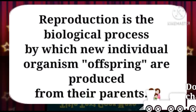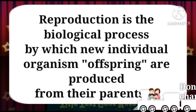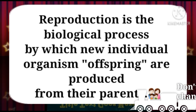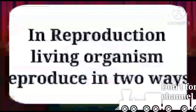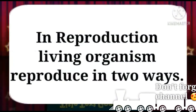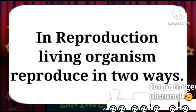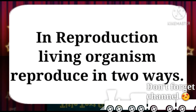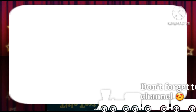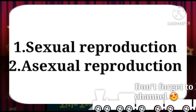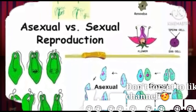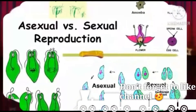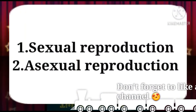Reproduction is the biological process by which new individual organisms, or offspring, are produced from their parents. Living organisms reproduce in two ways: number one is sexual reproduction, and number two is asexual reproduction.